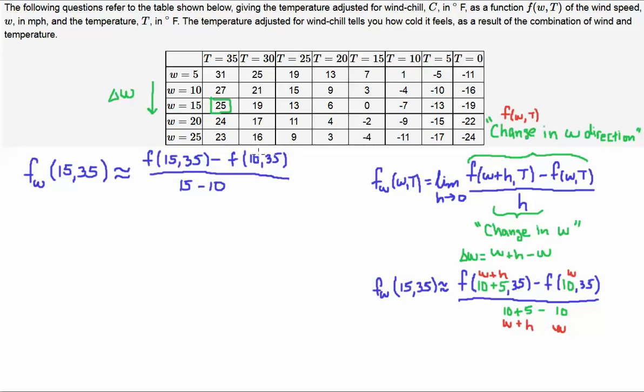And these are the two points I'm subtracting. So, in summary, I'm taking 25 minus 27. I'm putting that over 15 minus 10, which is 5. And this derivative approximates to minus 2/5.